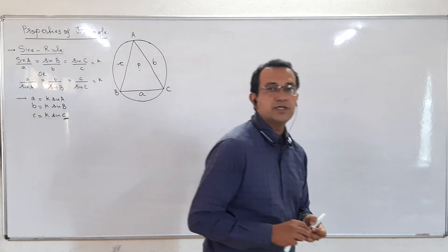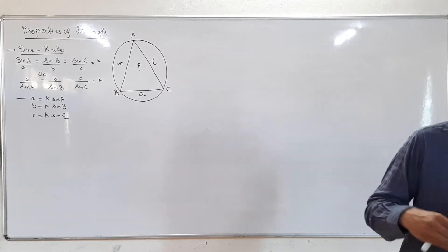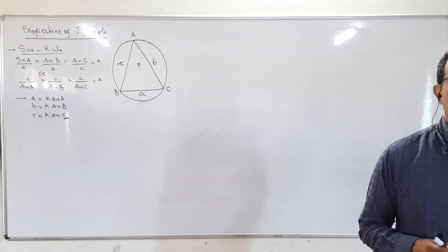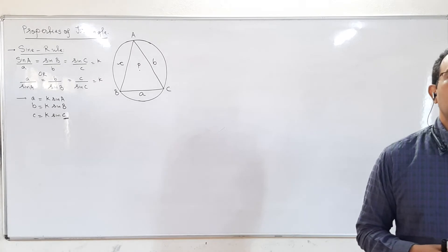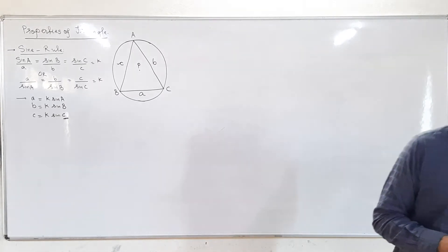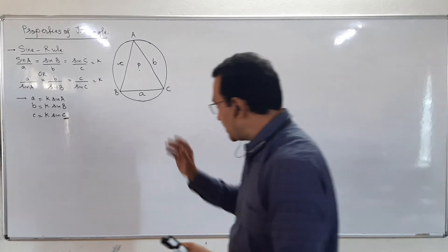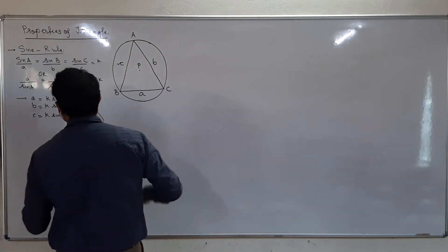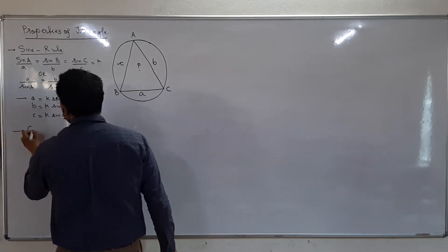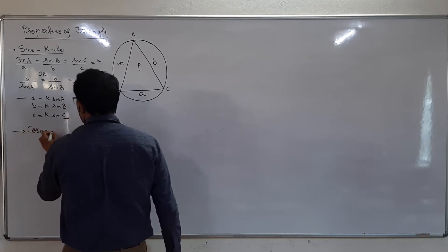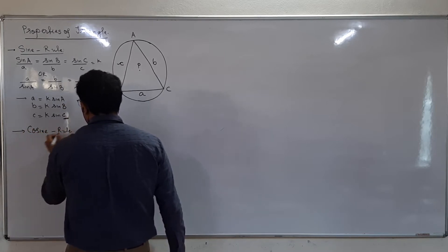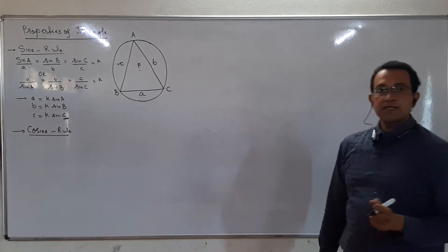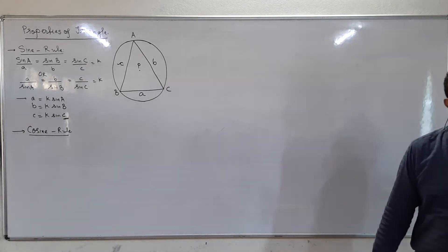So whenever we come across small a, b, or c in the sums, we go for the interpretation of the sine formula. The second formula is the Cosine Rule.